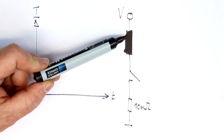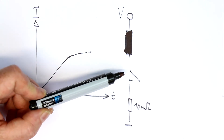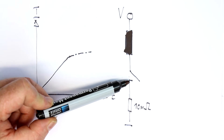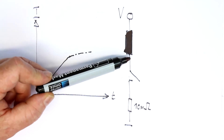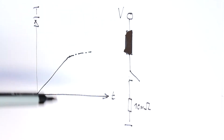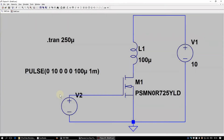Let's go to LT Spice. Switching a voltage source onto an inductor gives a linearly rising current. We'll see in the simulation what happens when we turn it off. Here is the simplified schematic: we have our inductor, I've chosen 100 microhenries as inductance; an ideal voltage supply of 10 volts; and the MOSFET — the type doesn't matter, we use it as an ideal switch.